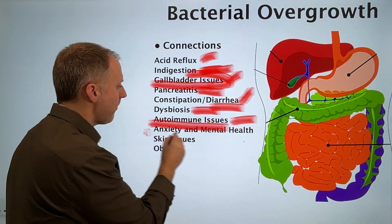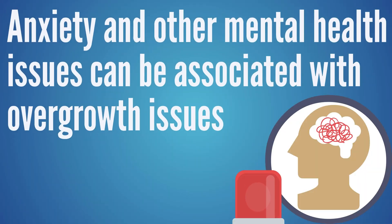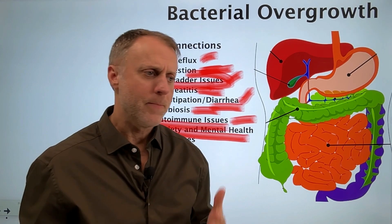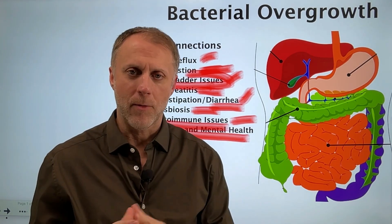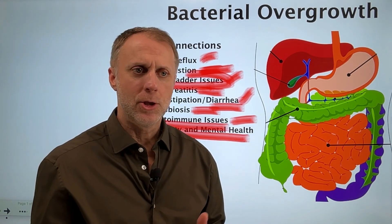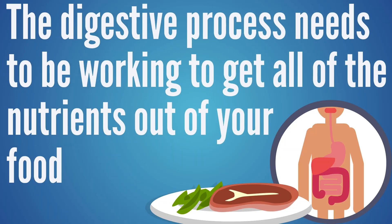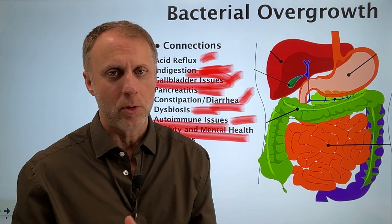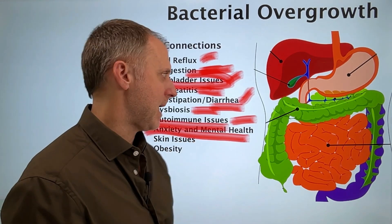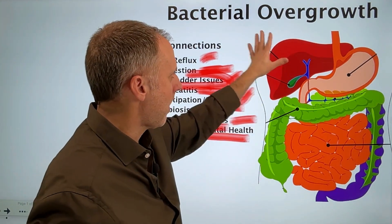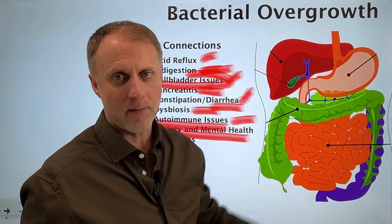You may be surprised that things like anxiety and other mental health issues can be associated with these overgrowth and dysbiosis issues. A lot of these mental health issues come about from the body's inability to have a fuel source and all the minerals and nutrients it needs to function correctly. We really need all of the digestive process working to get all the nutrients and minerals out of the food we're eating, and if we can't break foods down correctly, we can't get those nutrients out.